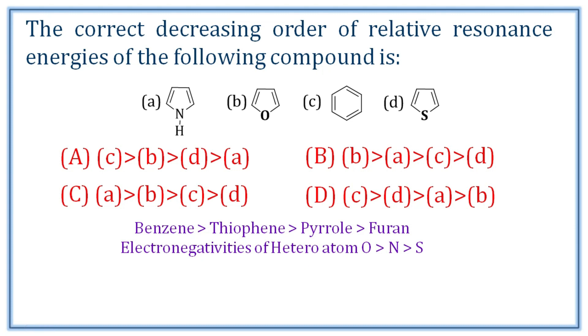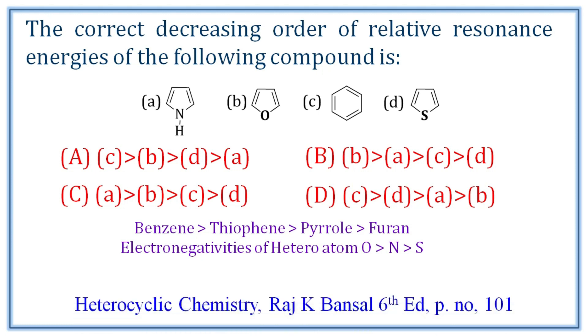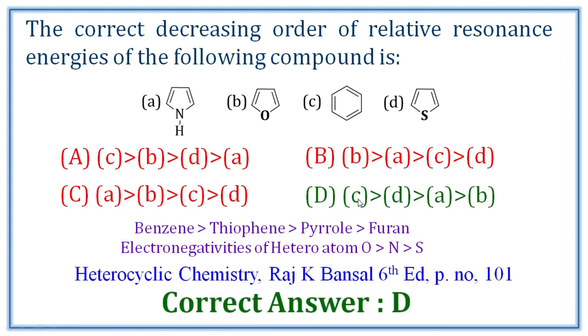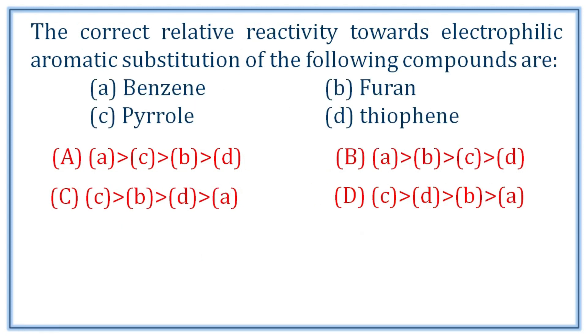The correct order is D: benzene, thiophene, pyrrole, and furan. That is the correct order. Answer: D.